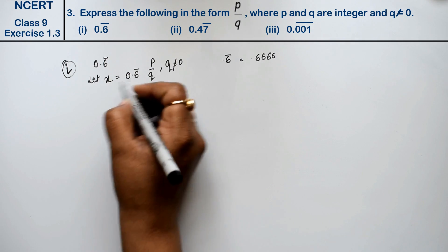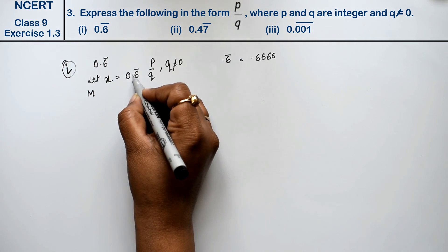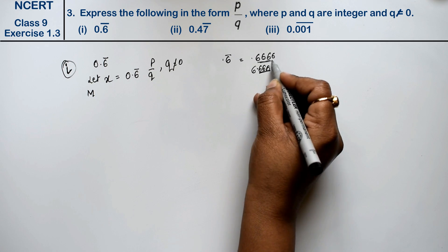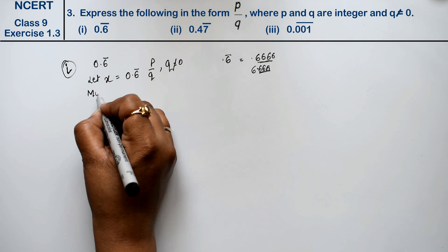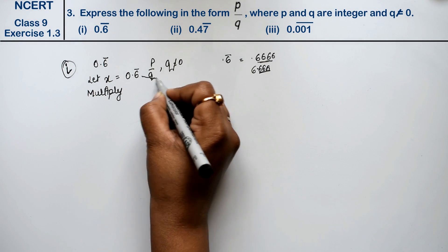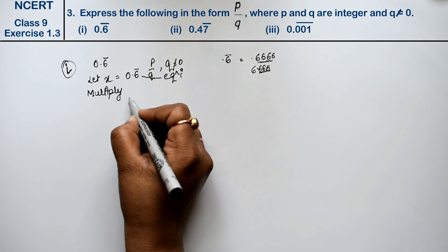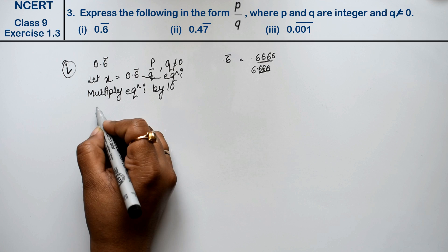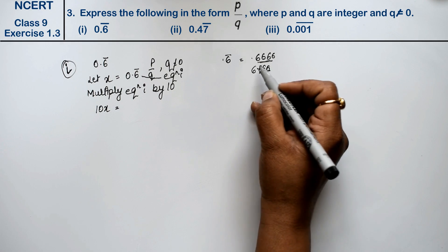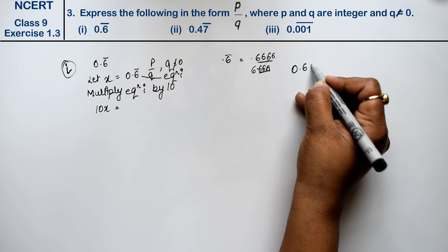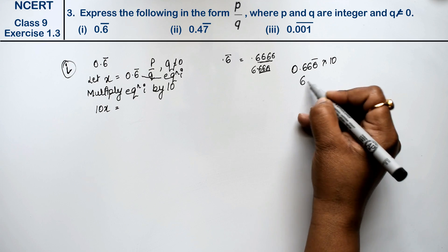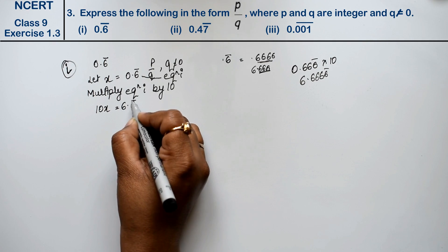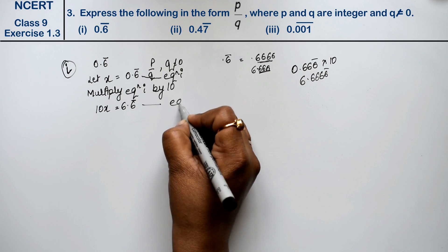Now we will multiply equation first by 10, because if our value is 6.6666... and we subtract, then the repeating decimal part cancels. So multiplying both sides by 10: 10x equals 6.6̄. This is our equation second.